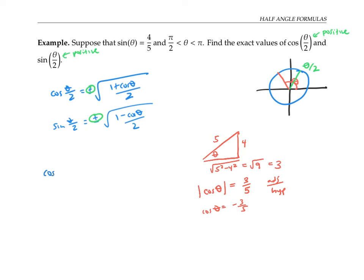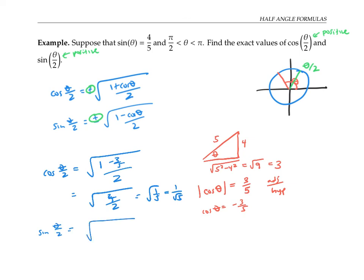Now I can plug into my formulas. Cosine of theta over two is the square root of one plus negative three fifths, all over two. That simplifies to the square root of two fifths divided by two, which is the square root of one fifth, or one over the square root of five. Sine of theta over two is the square root of one minus negative three fifths over two. That's the square root of one plus three fifths, or eight fifths over two, giving the square root of four fifths, or two over the square root of five.